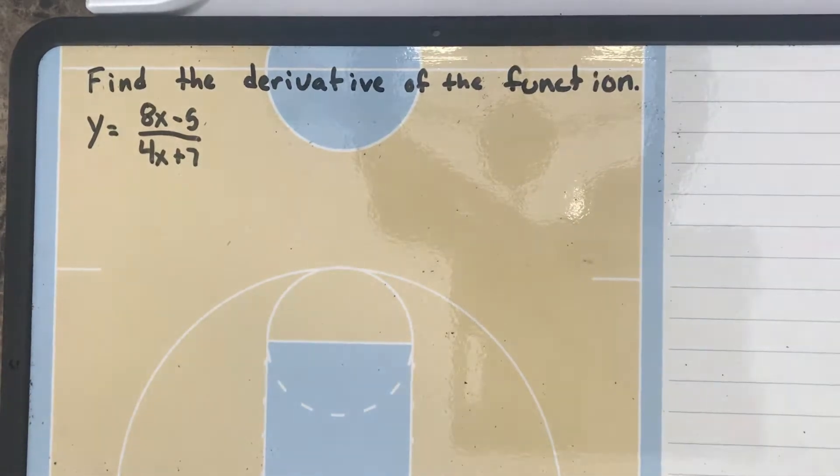Hey everyone, here's another example from section 3.3. This example is going to require us to use the quotient rule. It's a little different from the previous examples, but it says find the derivative of the function y equals 8x minus 5 over 4x plus 7.